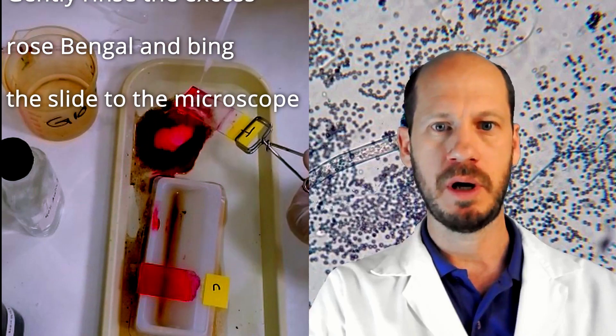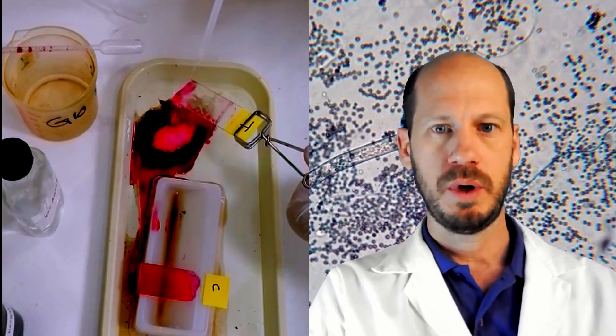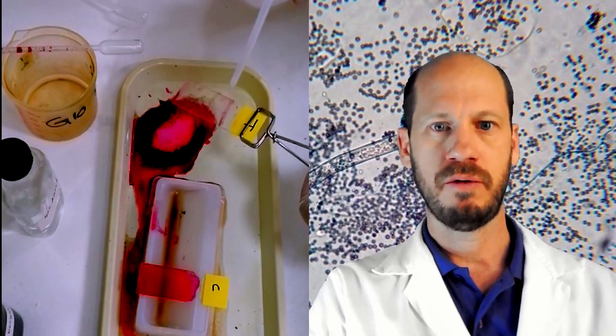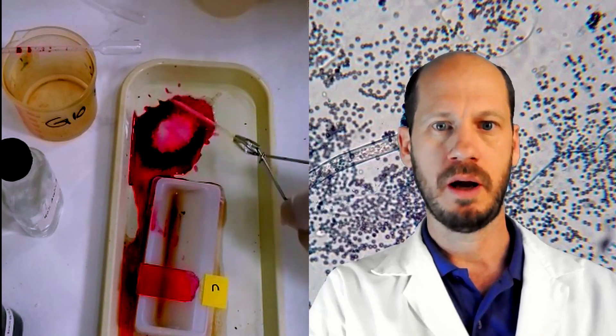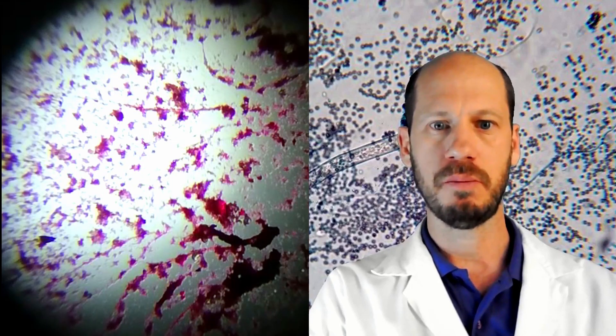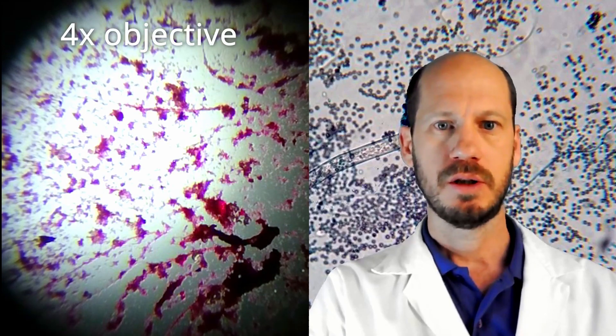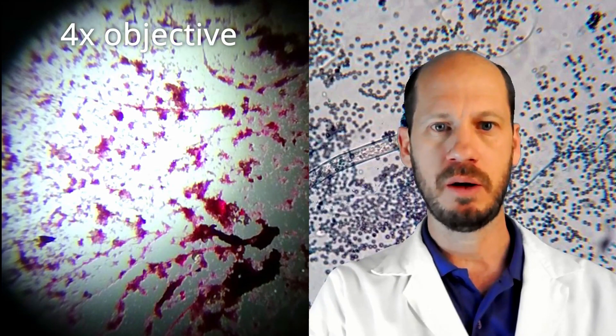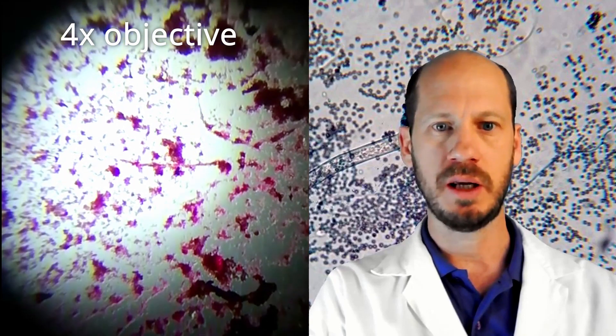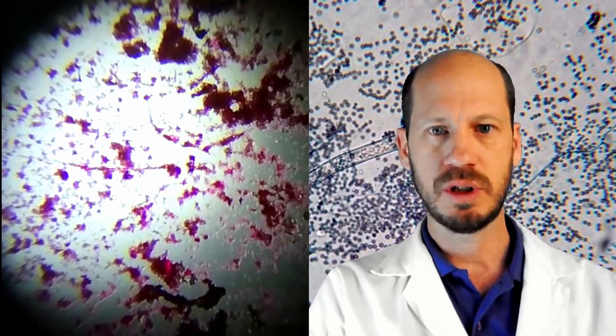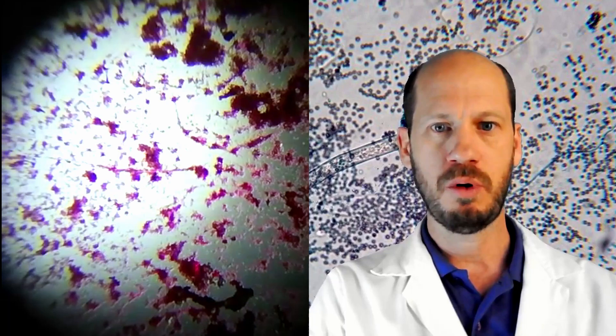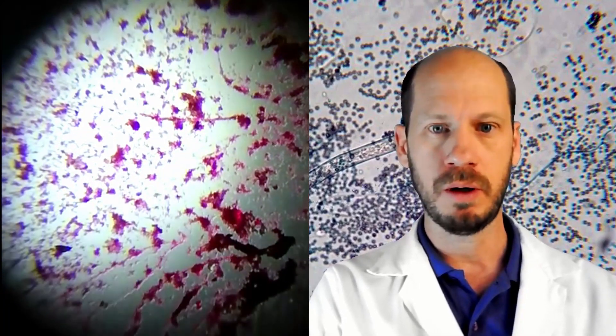Before observing in the microscope, we need to remove the excess of the rose bengal again. It looks like there is not much there, but when you look in the microscope, you will see very cool images. Here is the image on the microscope with the four times objective. At first, you don't see much. You see some soil particles and some aggregations that could be colonies.